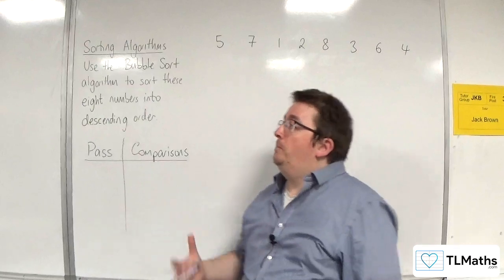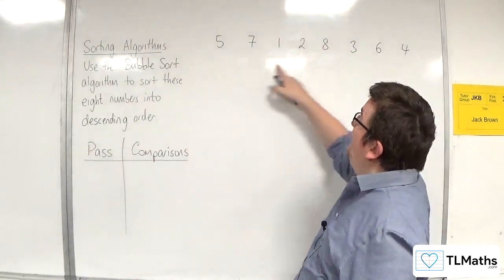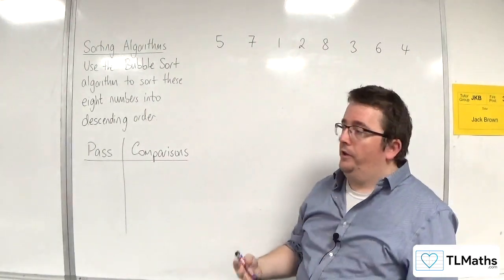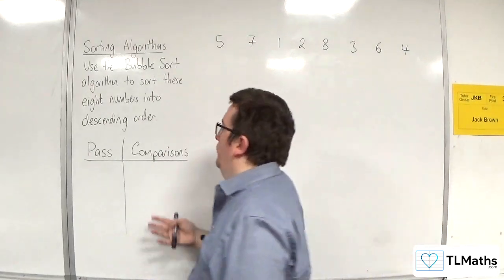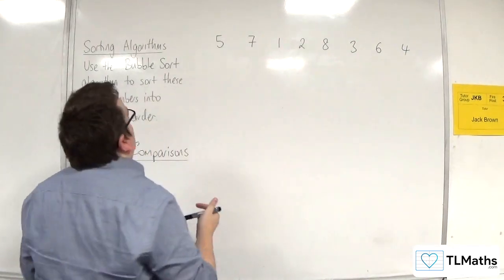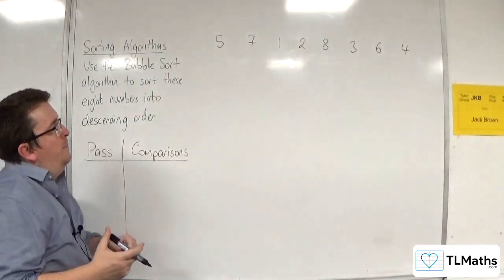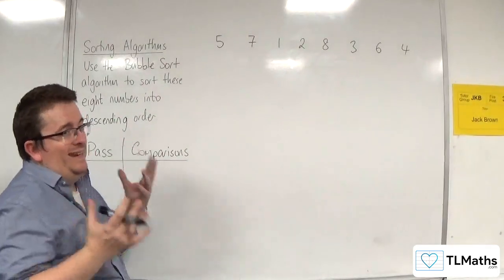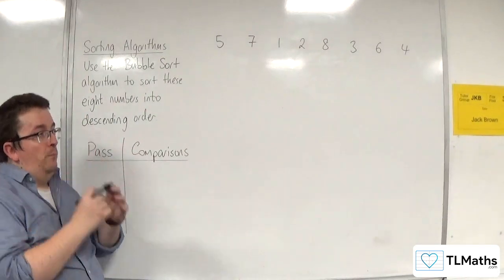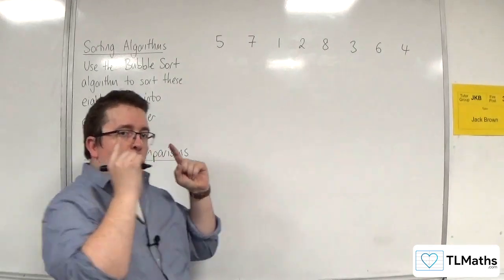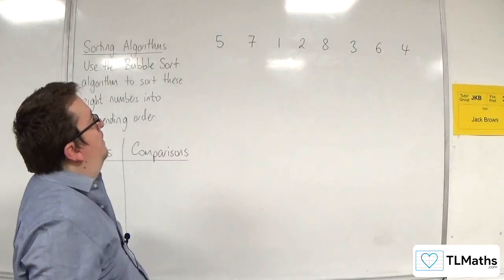In this video, I'm going to use bubble sort to sort eight numbers into descending order, and I'm going to track the number of comparisons at each pass. Remember, we're going into descending order, so the smallest number is going to bubble to the top of the list each time.